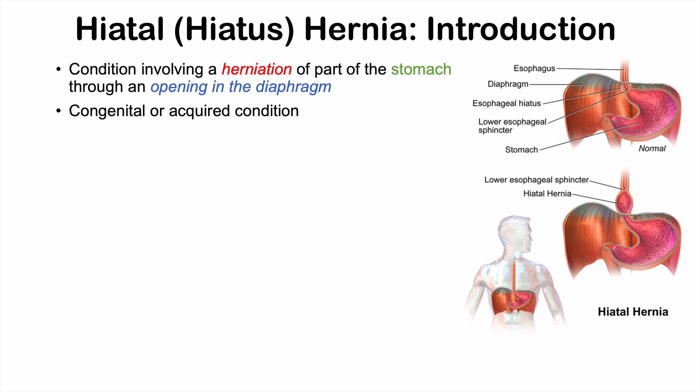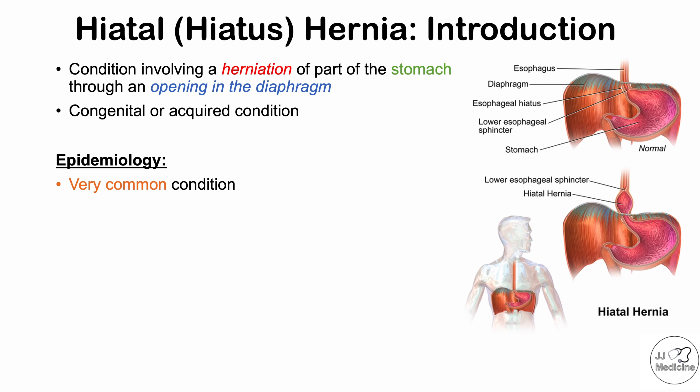This condition can be congenital, meaning people can be born with it, or it can be an acquired condition that someone gets later on in their life. Hiatal hernia is a very common condition, estimated to affect approximately 55 to 60 percent of individuals over the age of 50.